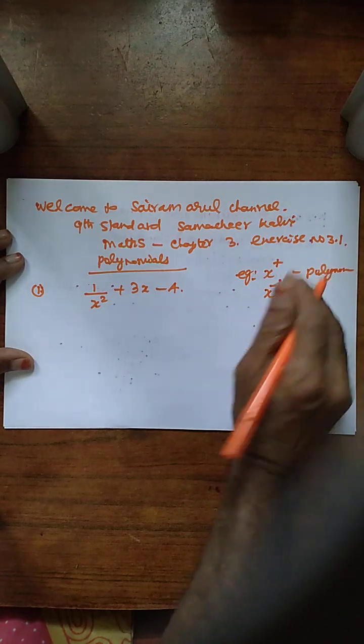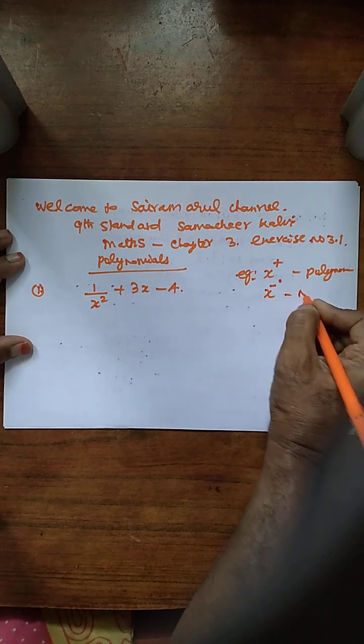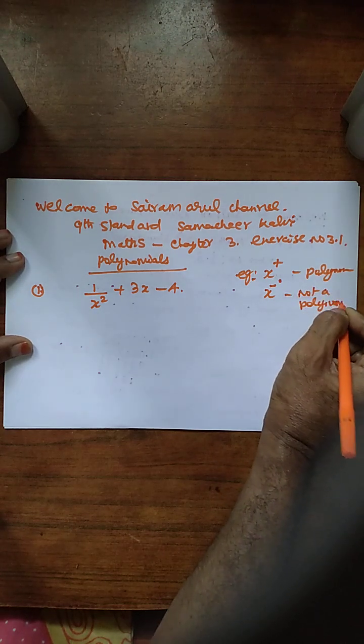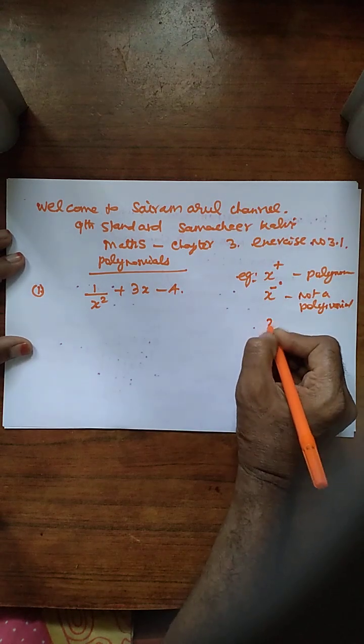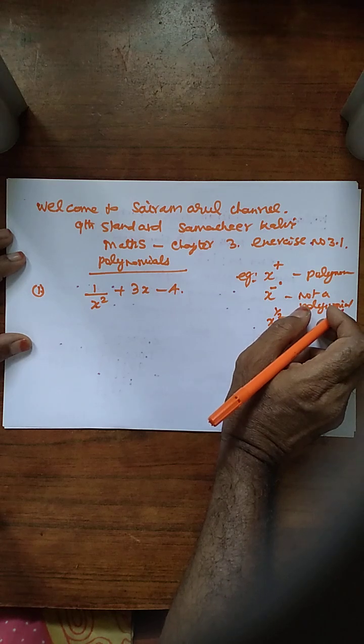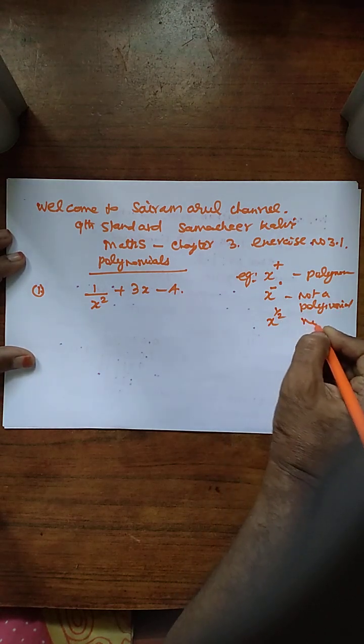If the variable power is negative, not a polynomial. And if x power variable power is a fraction like this, then it is also not a polynomial.